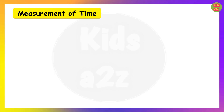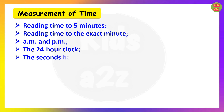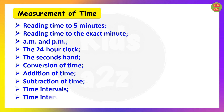The next chapter is Measurement of Time. Topics include: reading time to 5 minutes, reading time to the exact minute, AM and PM, the 24-hour clock, the seconds hand, conversion of time, addition of time, subtraction of time, time intervals, and time intervals in days — that means calculating time intervals of familiar daily life events.